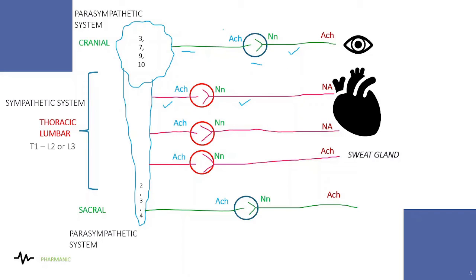The neurotransmitter released by the preganglionic fiber is always acetylcholine, whether in the parasympathetic or sympathetic system, and the receptor present on the postganglionic fiber is the NN receptor. The key difference is the neurotransmitter released by the postganglionic fiber: in the parasympathetic system it is acetylcholine, whereas in the sympathetic system it is noradrenaline — with one exception: in the sweat glands, the sympathetic postganglionic fiber releases acetylcholine.